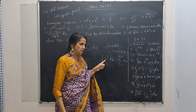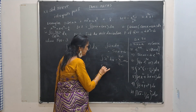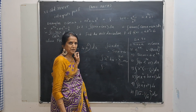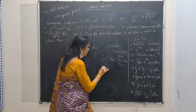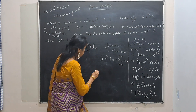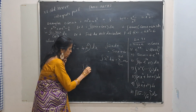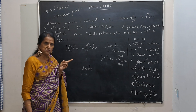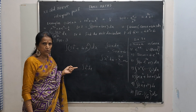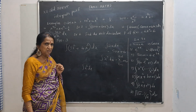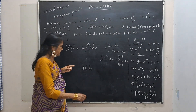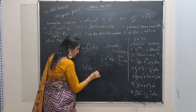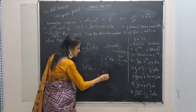For example, what will be the integral of x to the power 2 dx? What function when you differentiate gives you x squared? You know it will be x cubed by 3. Use the formula: x to the power n+1 by n+1. Here n is 2, so it is x to the power 3 divided by 3, plus c. So this is done by inspection — integrated by inspection.